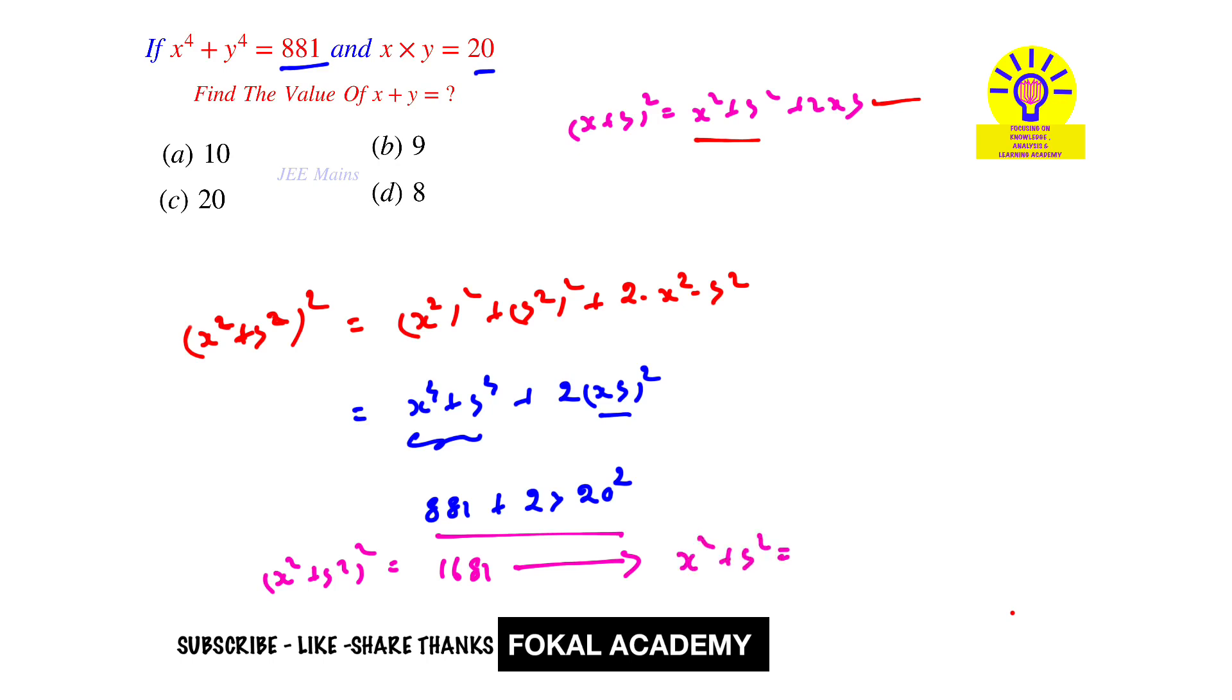Now substitute x square plus y square value in this equation. It becomes 41 plus 2 into xy. xy is given as 20, so that's equal to 41 plus 40, which is 81. Therefore, x plus y whole square equals 81, so x plus y equals the square root of 81, which is 9.